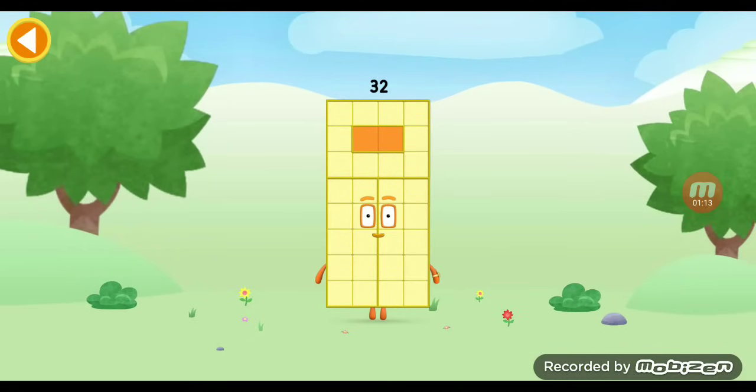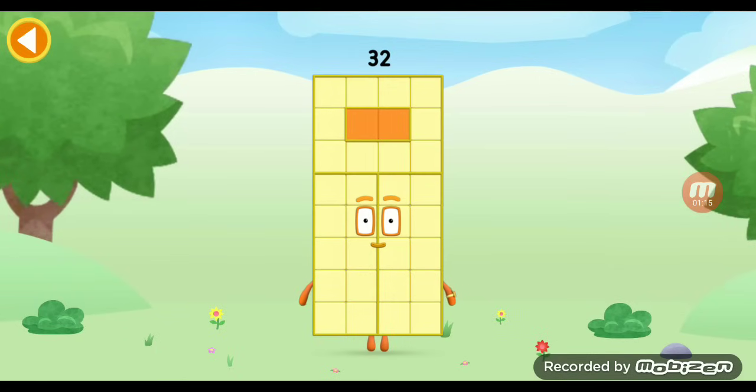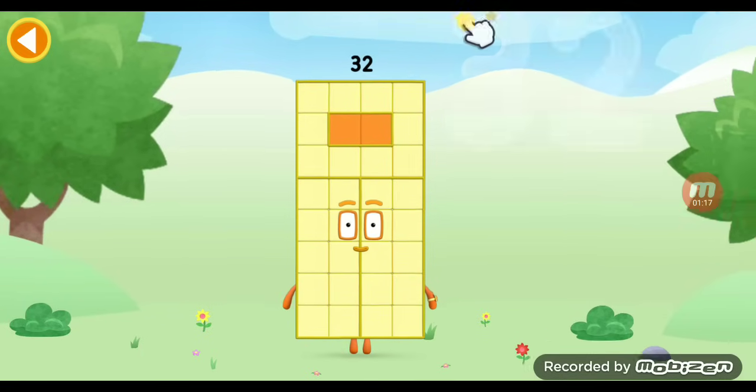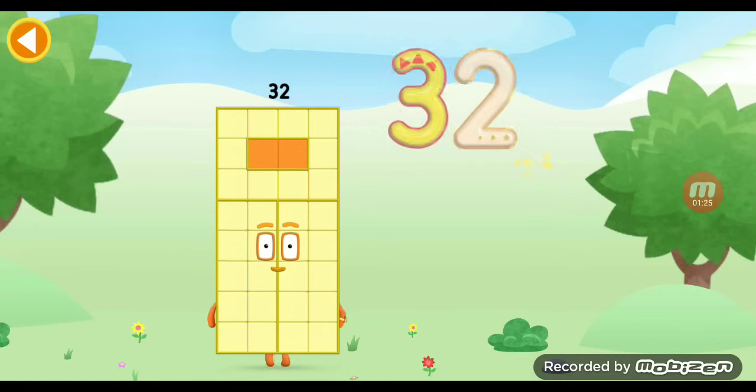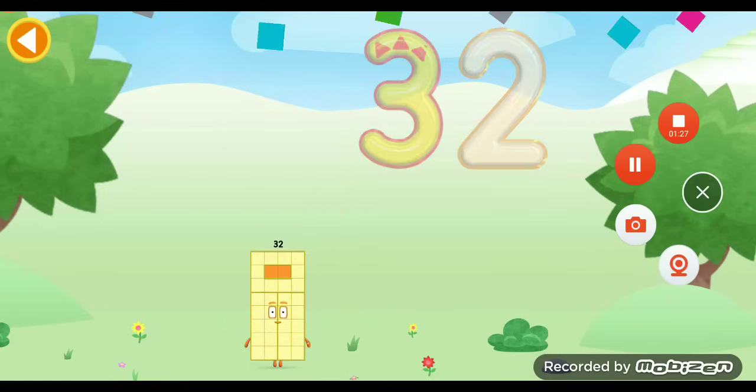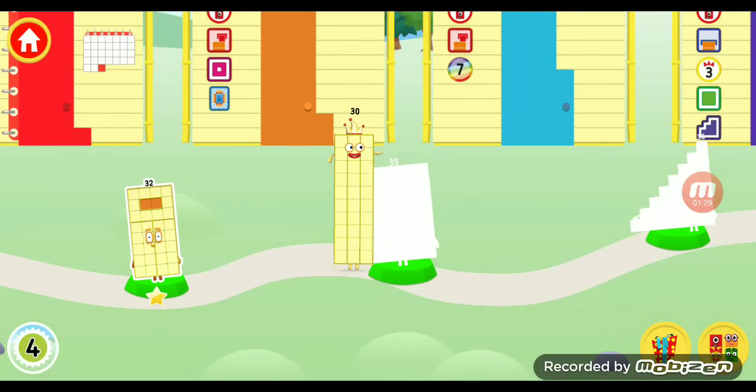This is number block 32. I am 32 and I am the doubler. Make a 3 and then a 10. That's how you make 32. Okay, so no outtakes. That's good.